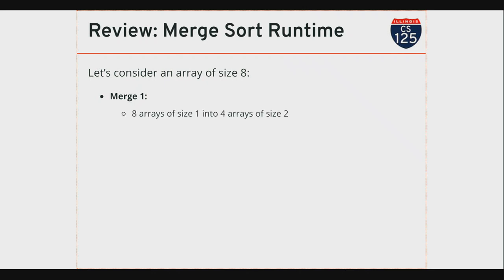Our first merge takes eight arrays of size one and merges them in pairs into four arrays of size two. Remember merge is O(N) in the size of the resulting array. We're doing four merges each producing an array with two items — so four merges of O(N) where N is two is equivalent to one O(N) step where N is eight. So this first level takes O(N) in the size of the original array. I'm doing a lot of merges but they're all small.